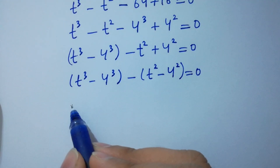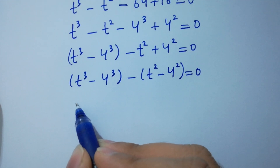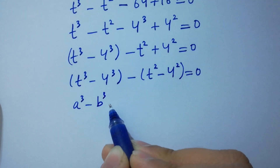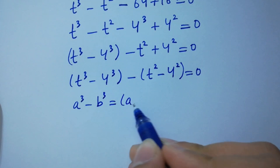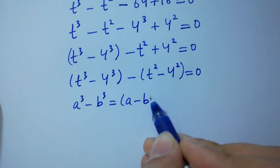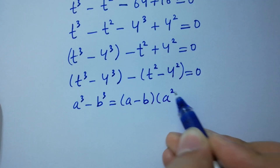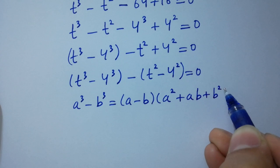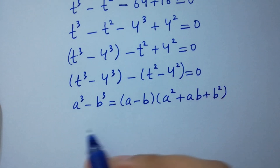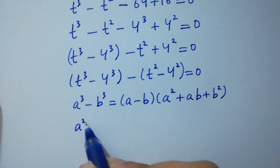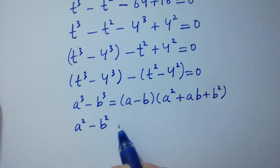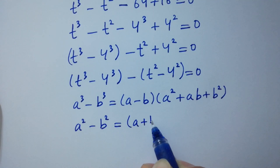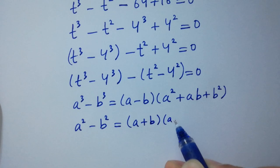As we know, a cubed minus b cubed equals (a minus b)(a squared plus ab plus b squared), and a squared minus b squared equals (a plus b)(a minus b).